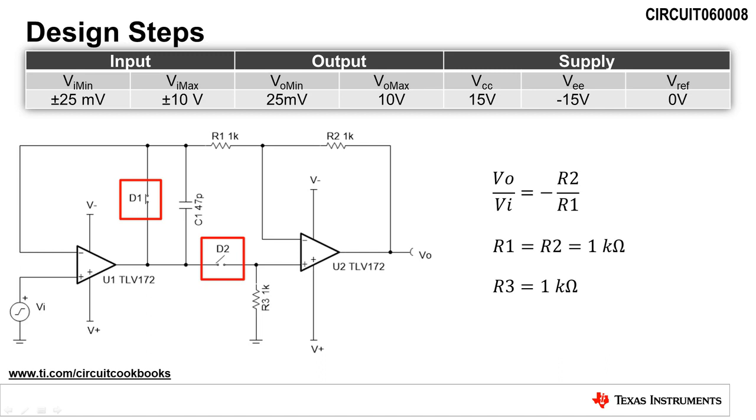The transfer function of the circuit in this configuration is equal to negative R2 divided by R1. Setting R1 equal to R2 produces a gain of minus 1 volts per volt.